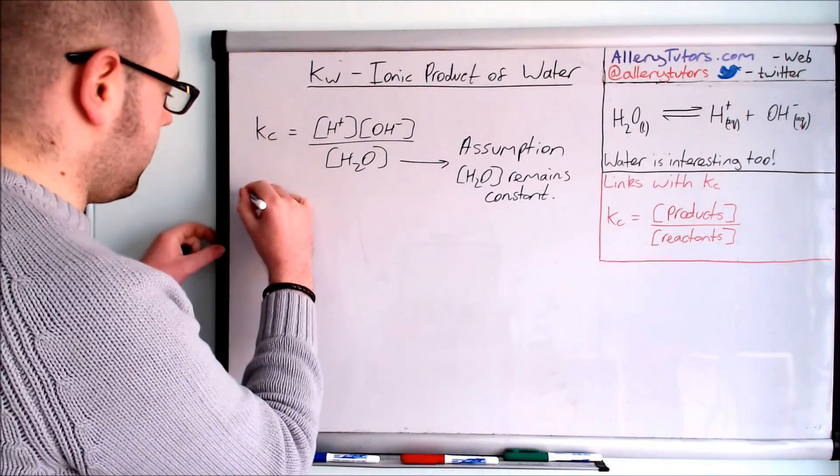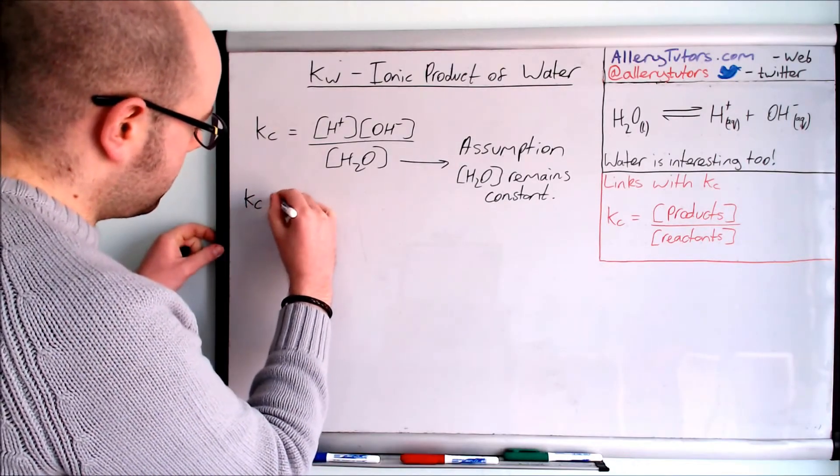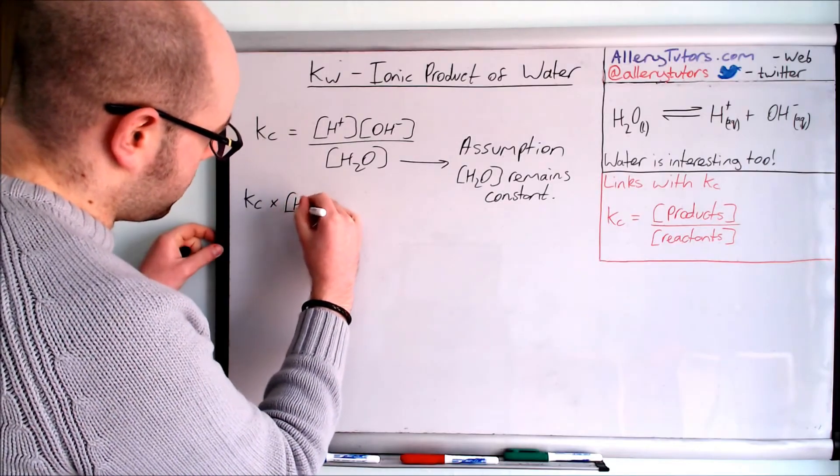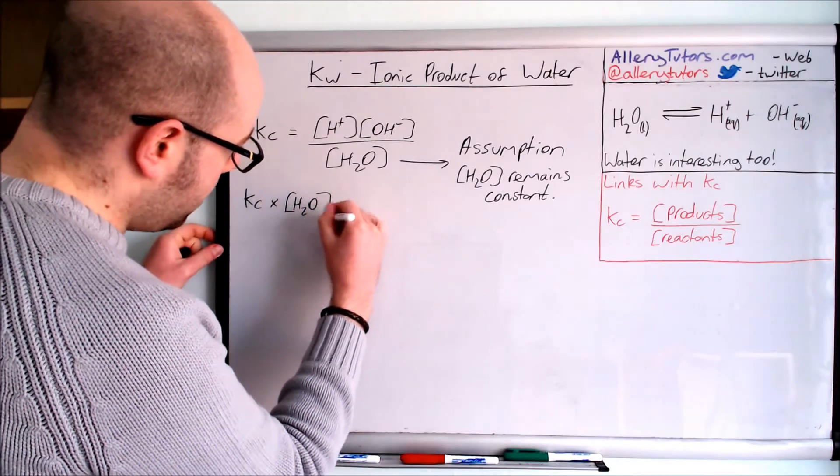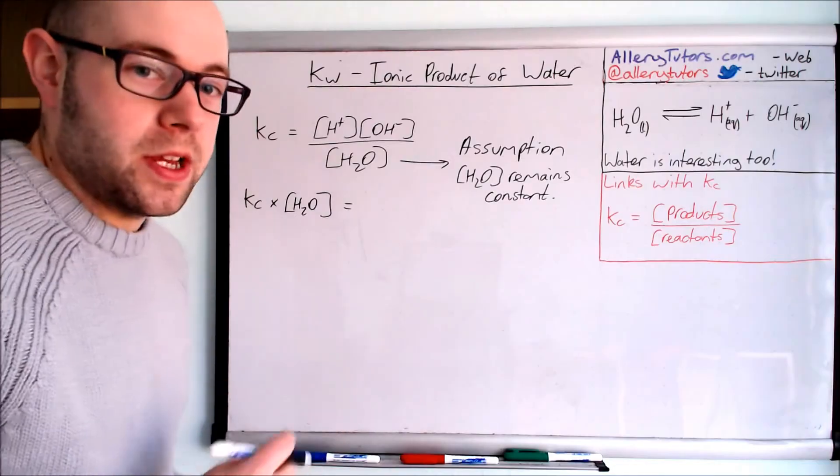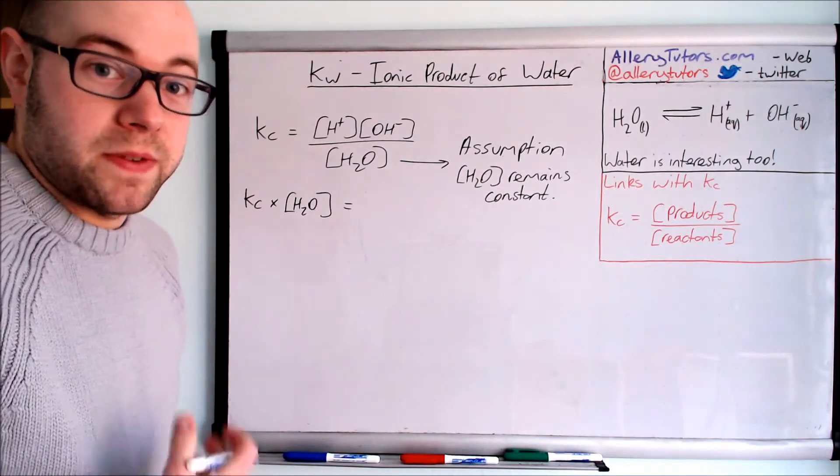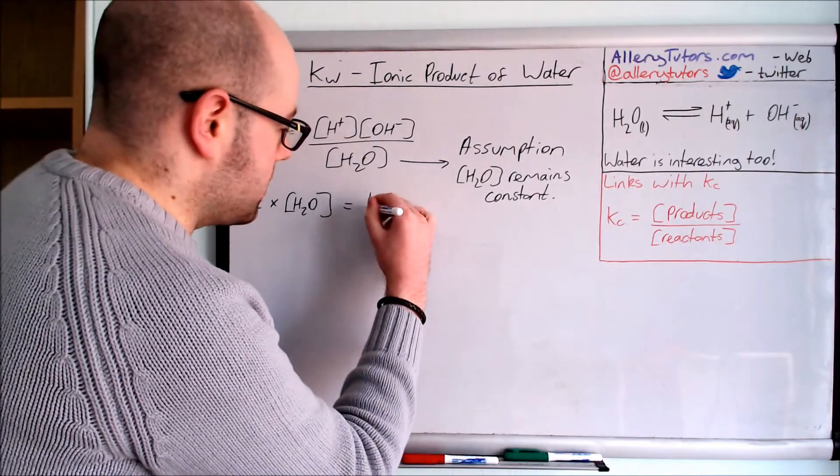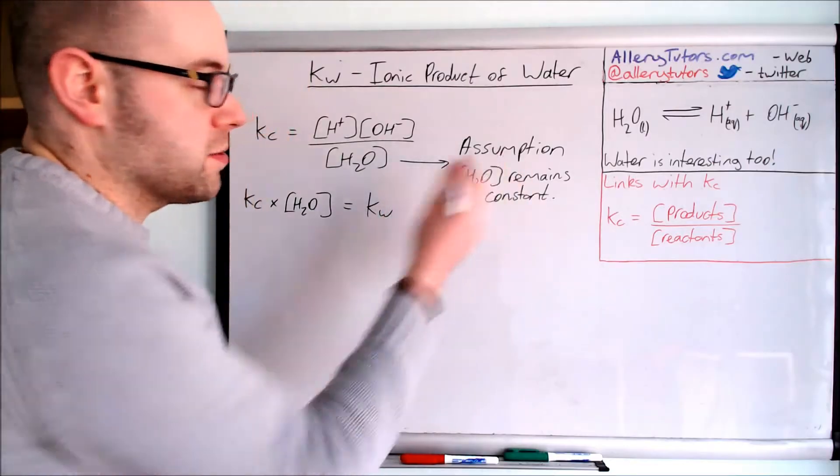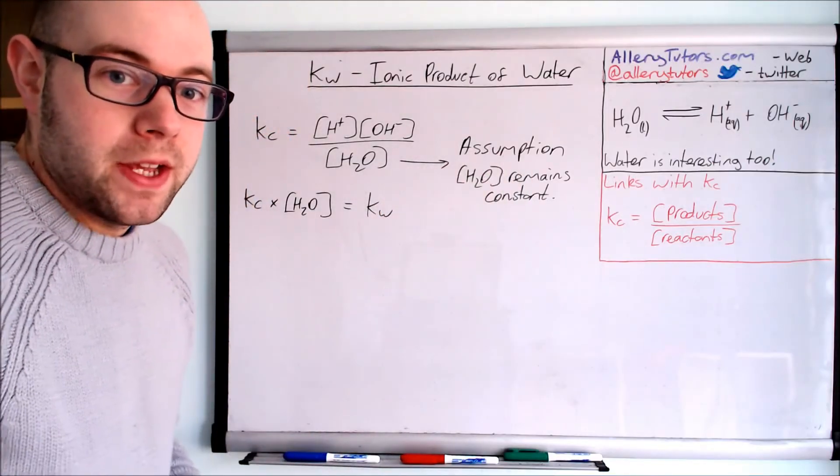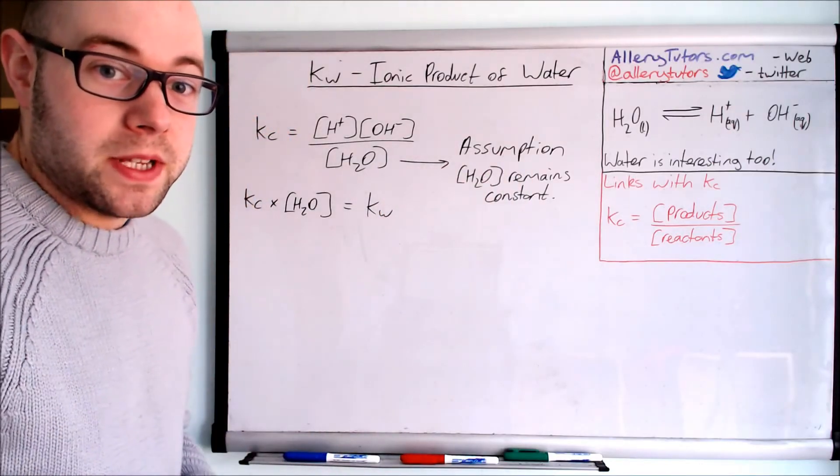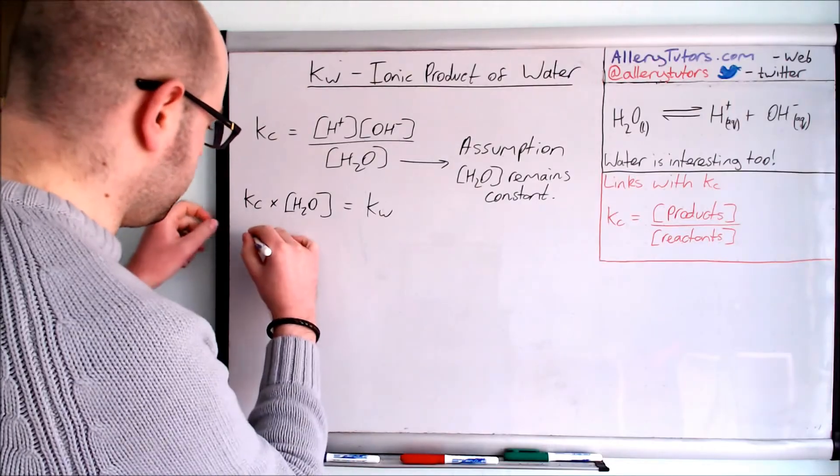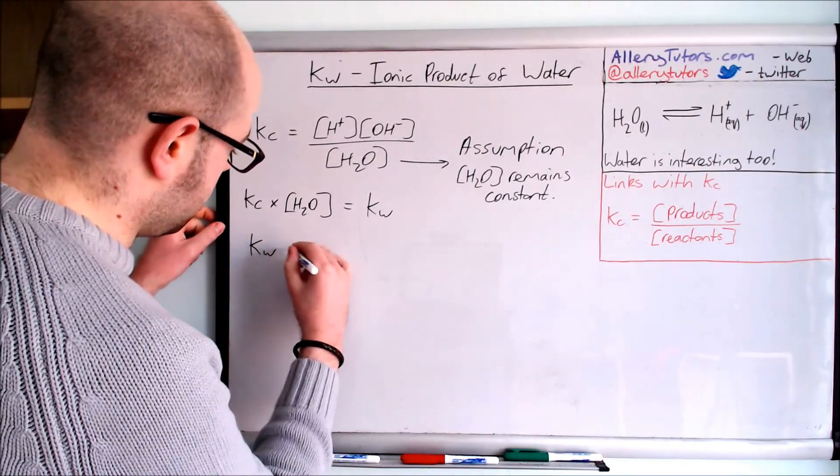This leaves us with Kc multiplied by the concentration of H2O. Chemists have come up with a new effective constant, and they call this Kw, taking into account this assumption. So we've come up with our Kw expression.